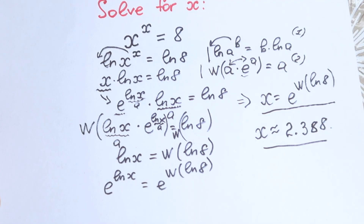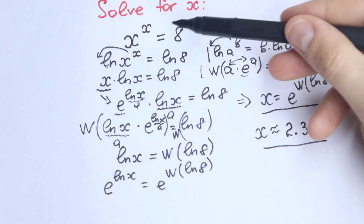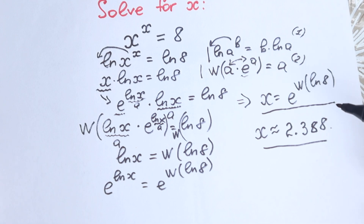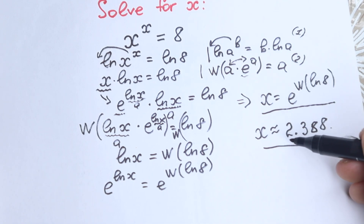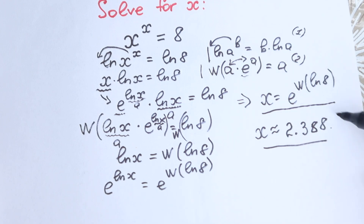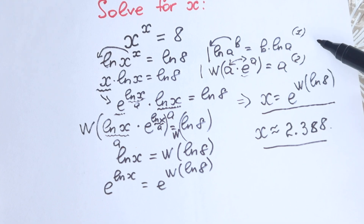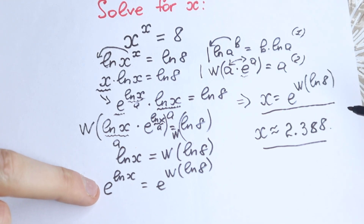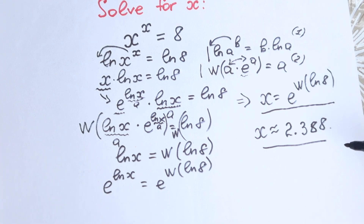As you can see, at first glance 8 looks like an even number where we might try combinations like 2 cubed, 2 to the fourth, 3 squared — so it looks like the answer might be easy. But the answer is actually a decimal: approximately 2.388, which is not an obvious thing. We cannot solve it by inspection, but with two tricks — the Lambert W function and the natural log property — we solve this question. I wish you all the best in your mathematics adventure, and if you still have questions, write them in the comments. Thank you for your time and have a great day!